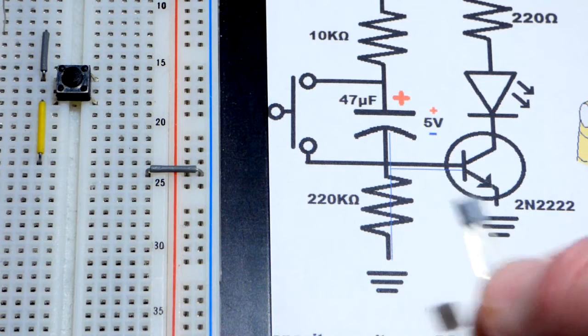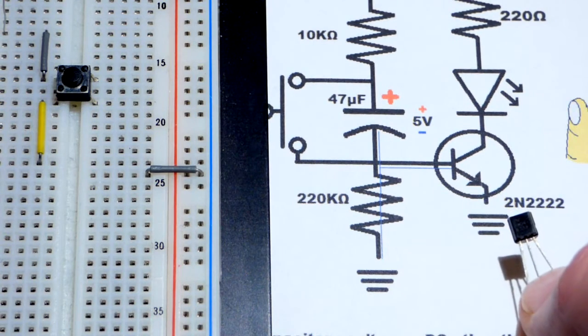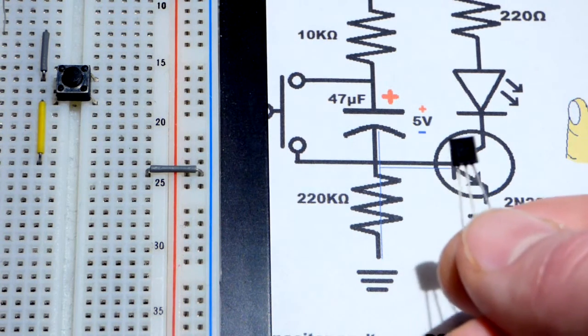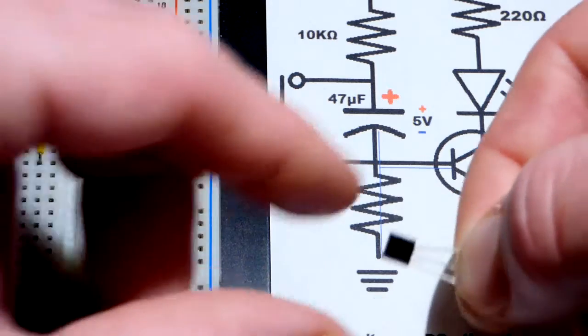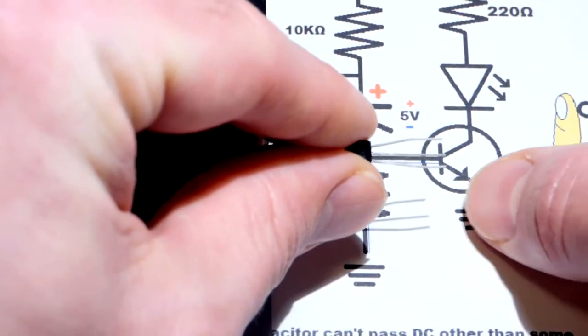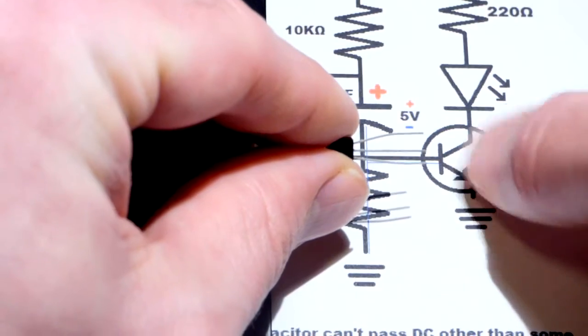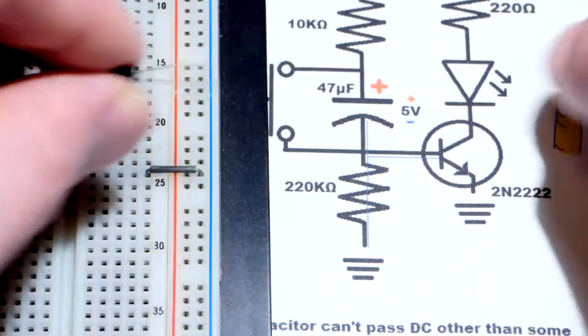Any bipolar junction transistor that starts with 2N that I've come across has the same pin layout. So if I just slide it this way, now it matches the schematic. Emitter on the bottom, base in the middle, and collector on top.